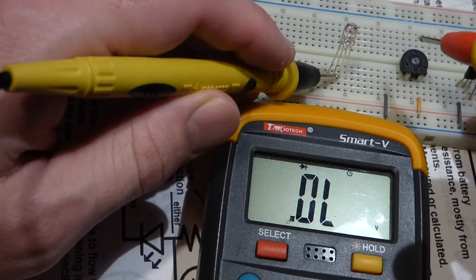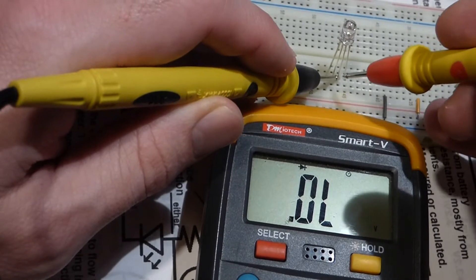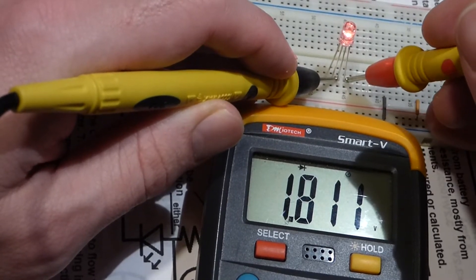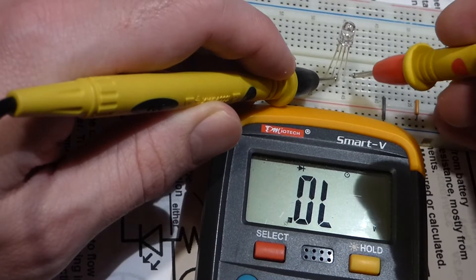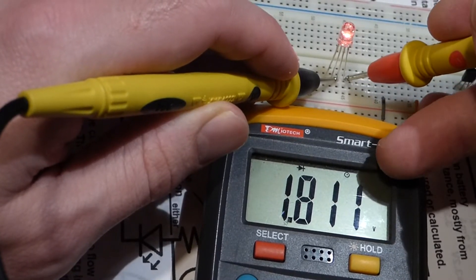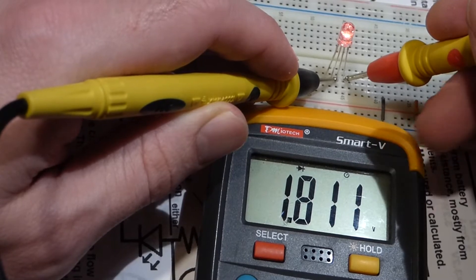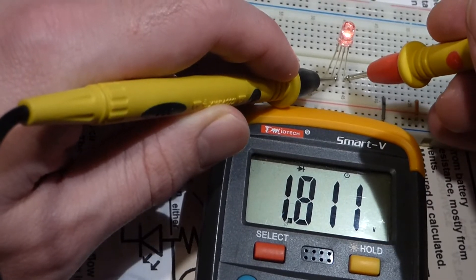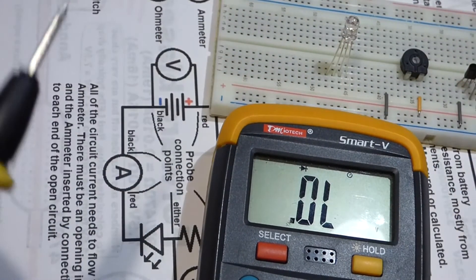We're going to put the black test probe there and then the red probe there. Now you see we get a red light coming from the LED and it has a voltage drop, a forward voltage of 1.8 volts. That's common for red LEDs.